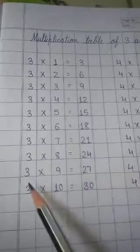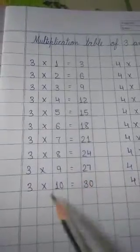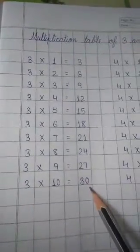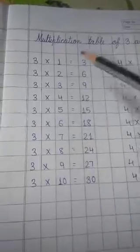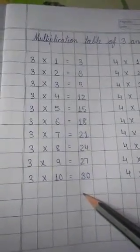3×8 is 24. 3×9 is 27. 3×10 is 30. So, you will be reading in this way at your home.